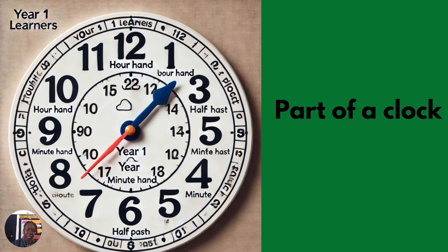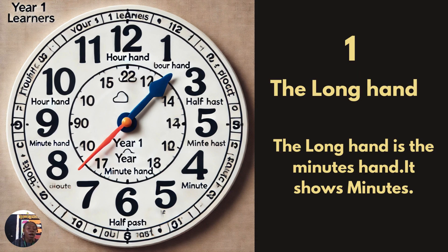Parts of a clock. You know a clock is round and it has 12 numbers. The first part is the long hand. The long hand is called the minute hand. It shows minutes. When you look at your clock, you will see the long hand which shows minutes.